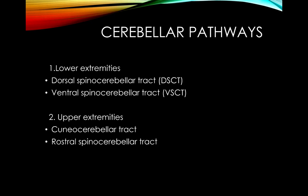Information from the arms and legs reaches the cerebellum through the spinocerebellar tracts. There are two for the lower extremity — the dorsal and ventral spinocerebellar tracts — and two for the upper extremity: the cuneocerebellar and rostral spinocerebellar tracts. You are expected to know the dorsal and ventral spinocerebellar tracts for the legs, as these are more likely to appear on board exams.